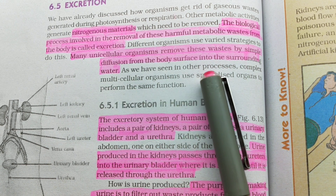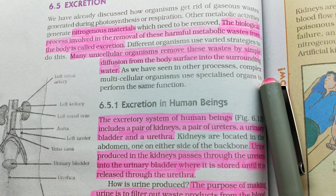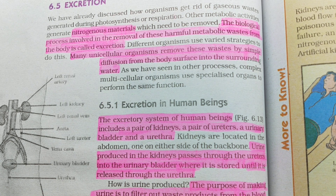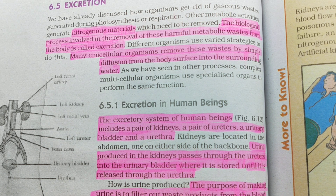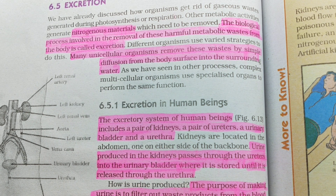As we have seen in other processes, complex multicellular organisms use specialized organs to perform the same function. Multicellular organisms ke paas specialized organs hote hain is function ko perform karne ke liye. So next we are going to cover excretion in human beings — section 6.5.1.